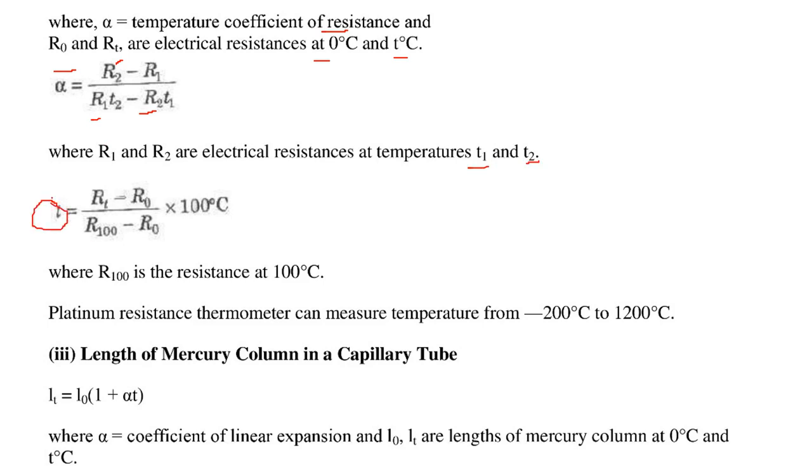Then this T is given by RT minus R0 by R100 minus R0 into 100. This R100 is the resistance at 100 degree centigrade. The platinum resistance thermometer, this can measure temperature from this range to this range.